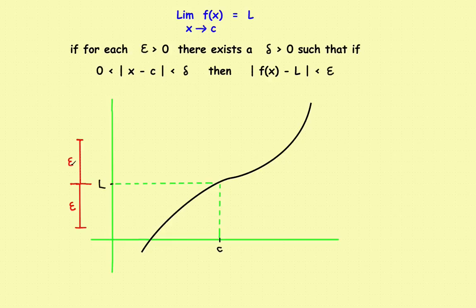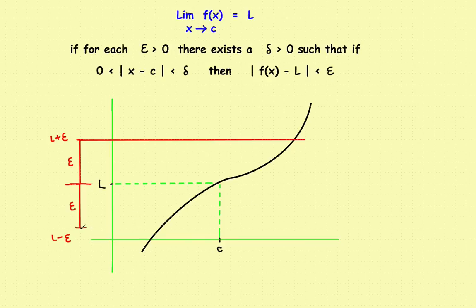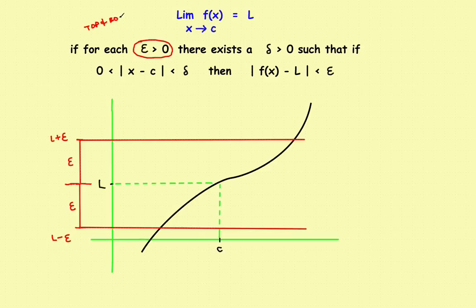If I started at L and went up epsilon, then this distance right here would be L plus epsilon. If I started at L and went down a distance epsilon, this distance right here would be L minus epsilon. So this defines the top and the bottom of the box. So the first thing you do — and this is step one — is you get to pick an epsilon that defines the top and the bottom of the box.